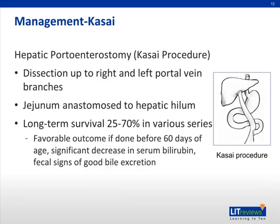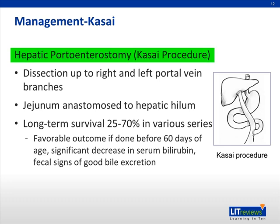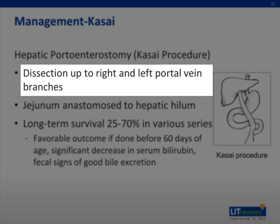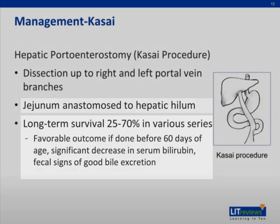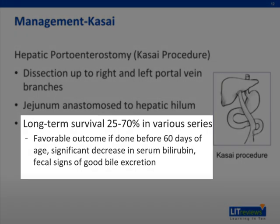One surgical management of the disease is the Kasai procedure, or hepatic portoenterostomy. To perform this procedure, a dissection is taken up to the right and left portal vein branches. The jejunum is anastomosed to the hepatic hilum. Various series have demonstrated a long-term survival of 25 to 70%. A favorable outcome is demonstrated if done before 60 days of age, and if the child has a significant decrease in serum bilirubin and fecal signs of good bile excretion.